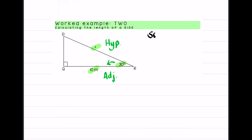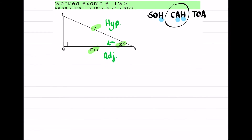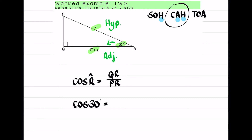Some old hens, cackle and howl, till old age. I have the hypotenuse, so it could be sine or cos. But I'm also given the adjacent side, so I'm going to use cos. Cos of angle R equals adjacent over hypotenuse — QR over PR. Substituting in: cos of 30° equals 10 over x.